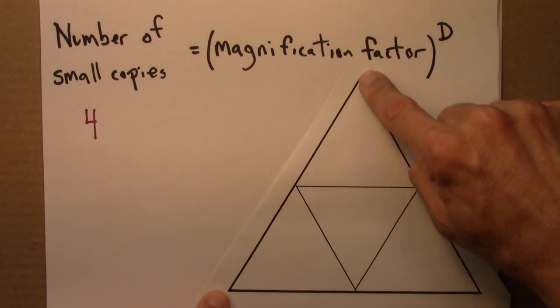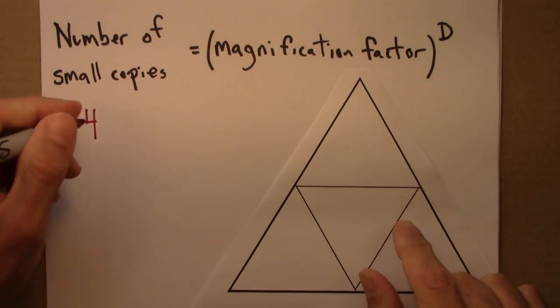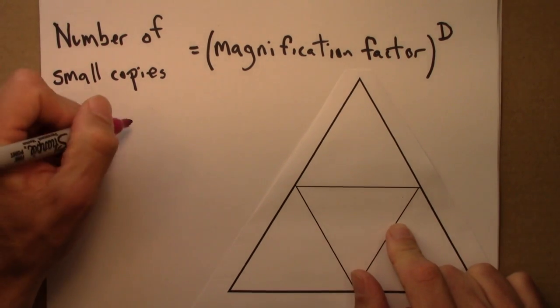Or you can see that this length, the full triangle, has two, one, two triangles there. So that means that the magnification factor is two.